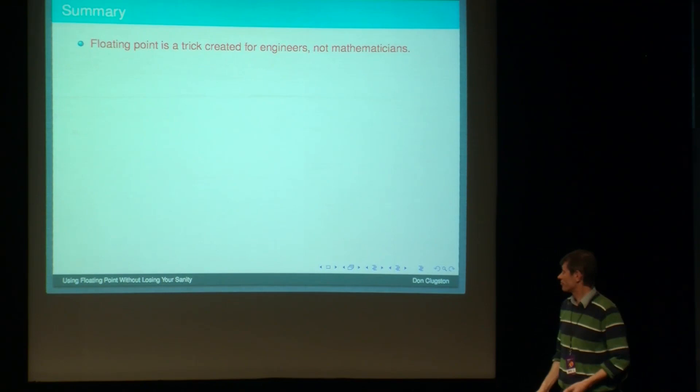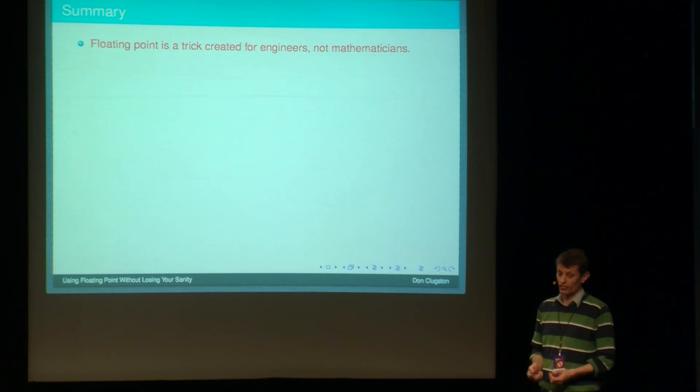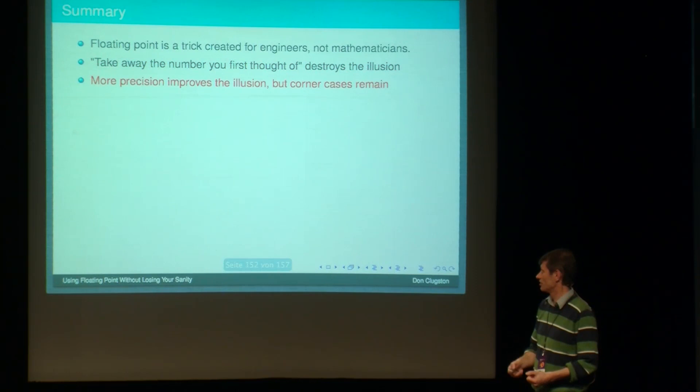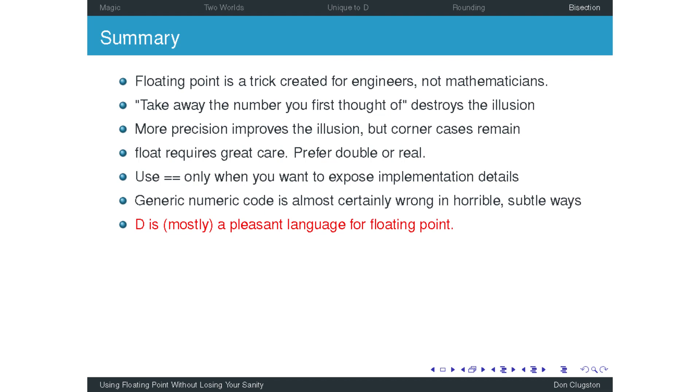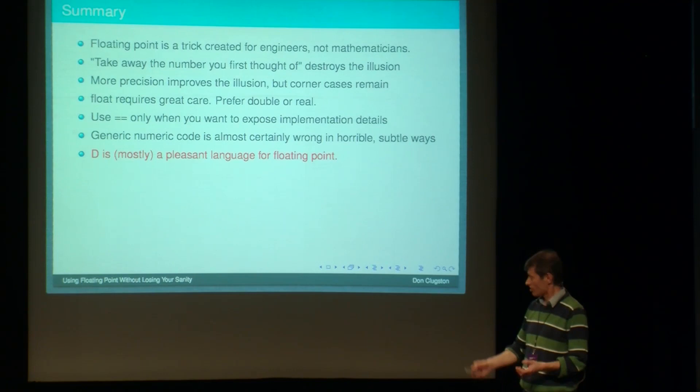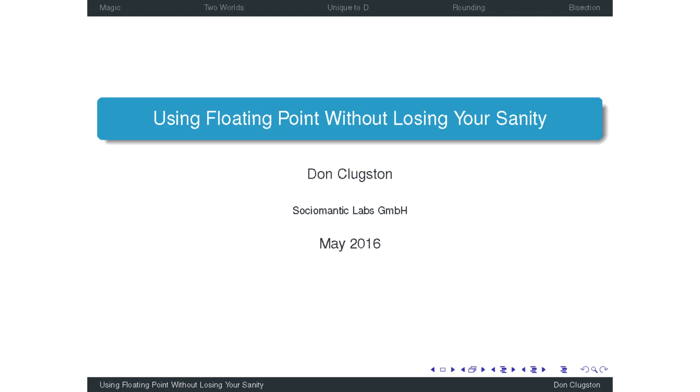So I'll finish up. Floating point, it's a trick for engineers. It's not actually as mathematical as you imagine. This take away the number you first thought of is an illusion destroyer. If you add more precision, you'll improve the illusion, but you've still got your corner cases. Using float with its tiny budget is a big... You can do it, but you need to be very careful. Use equality when you want to expose implementation details. And generic numeric code is almost certainly wrong in horrible, subtle ways. And D is mostly a pleasant language for floating-point, despite the caveats. Thanks.